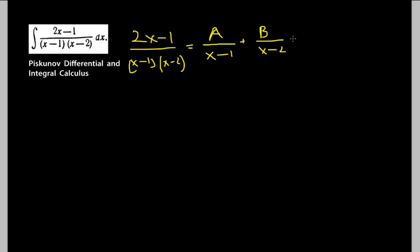So how do we solve for A and B? Let's multiply both sides by (x-1)(x-2). We get 2x-1 equals A(x-2) plus B(x-1). Now to solve for A and B, there's a longer way and a shorter way. I'm not going to tell you the long way because it's really too long.